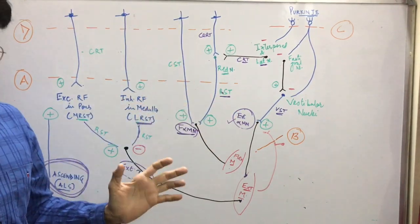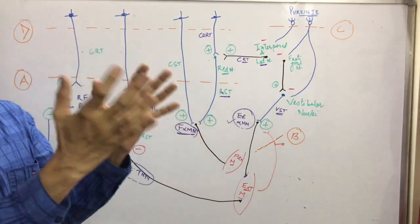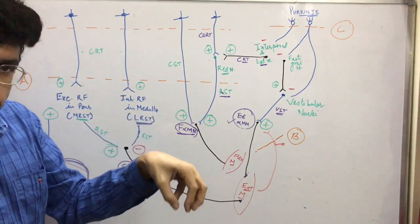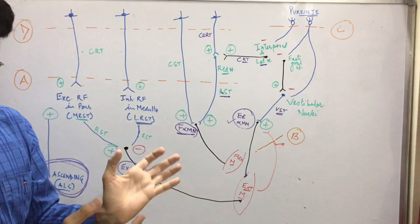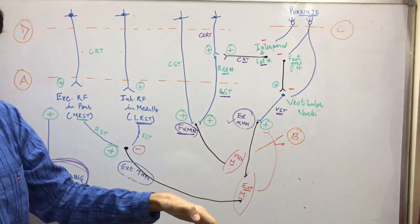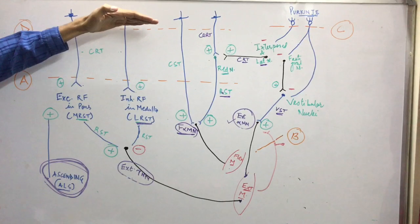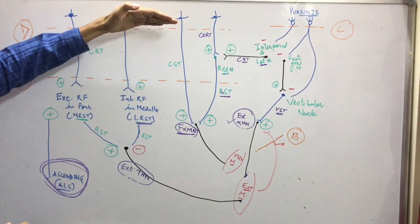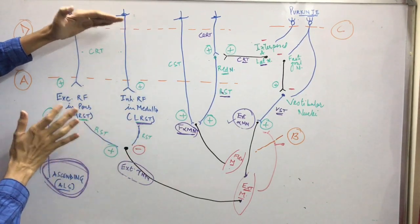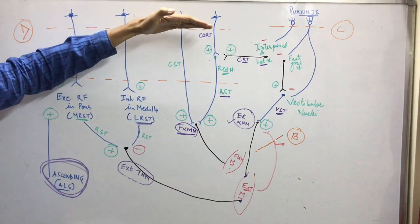That hemorrhage compresses the cerebral cortex, and because of the compression, ultimately it will cause herniation of the medial temporal lobe because it has space to come downward. It will herniate and keep on swelling and compressing. The brain stem will keep on getting affected from upper to lower. If there is effect up to the level of the upper part of the midbrain, then what will be the clinical features of the person whose compression is above the upper part of the midbrain?